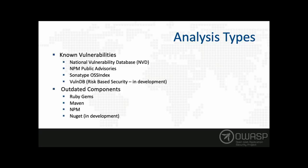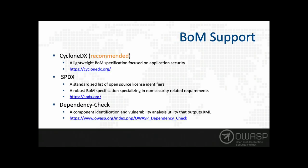The types of analysis we perform include vulnerabilities and outdated components. For vulnerabilities we check the NVD, integrate natively with NPM public repositories using the NPM audit API, and big thanks to Sonatype for supporting OSS Index. We have partial support for VulnDB. For outdated components we currently support Ruby Gems, about nine or ten Maven public repositories, NPM, and NuGet is in development.